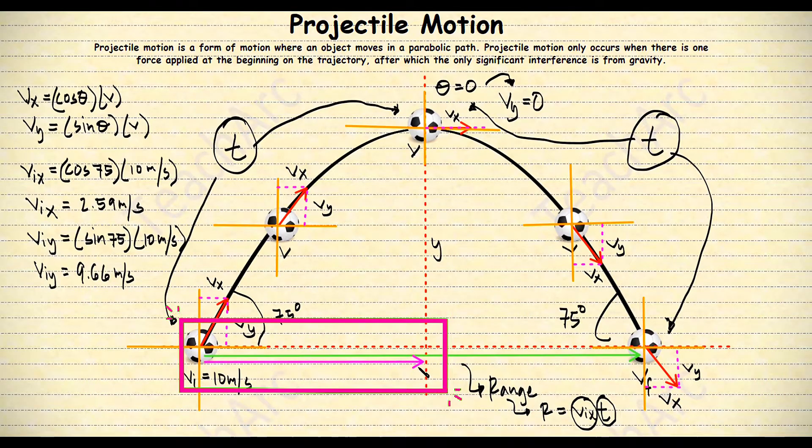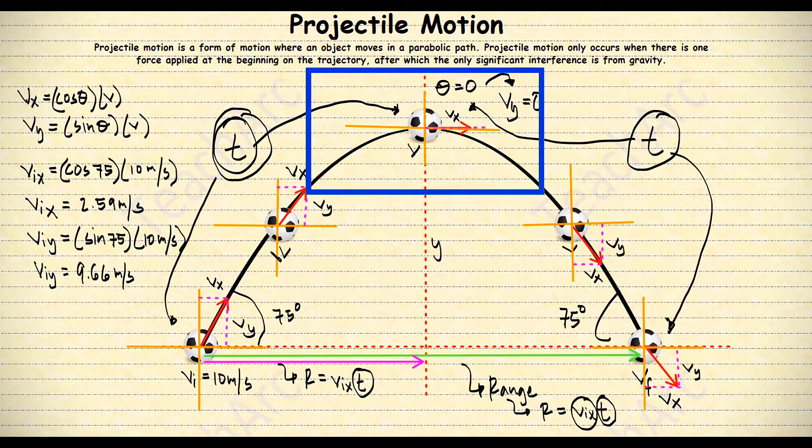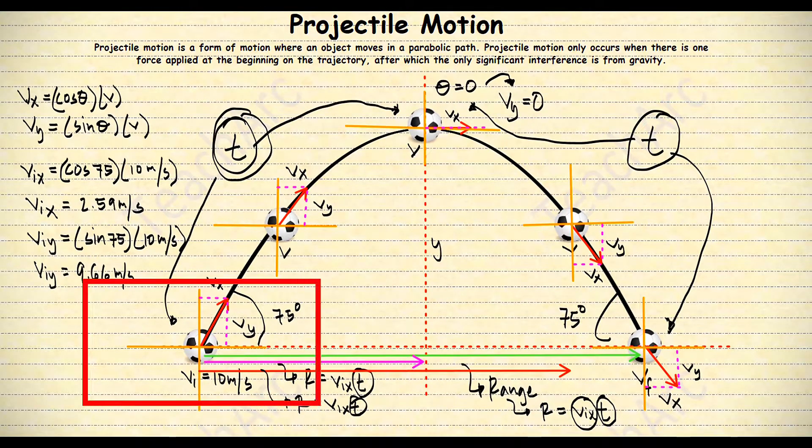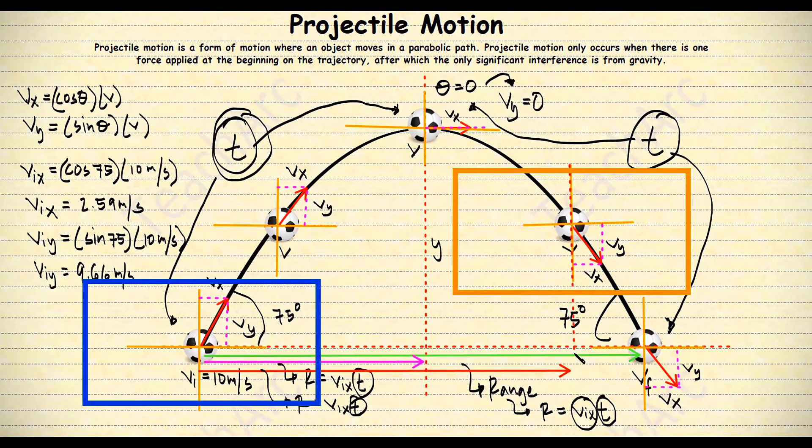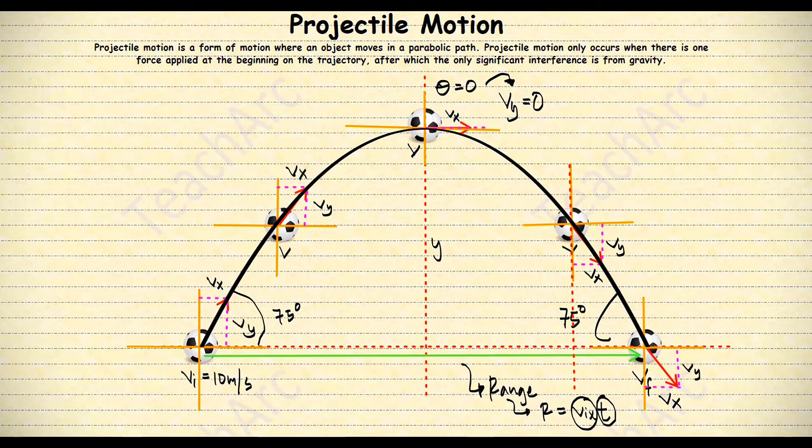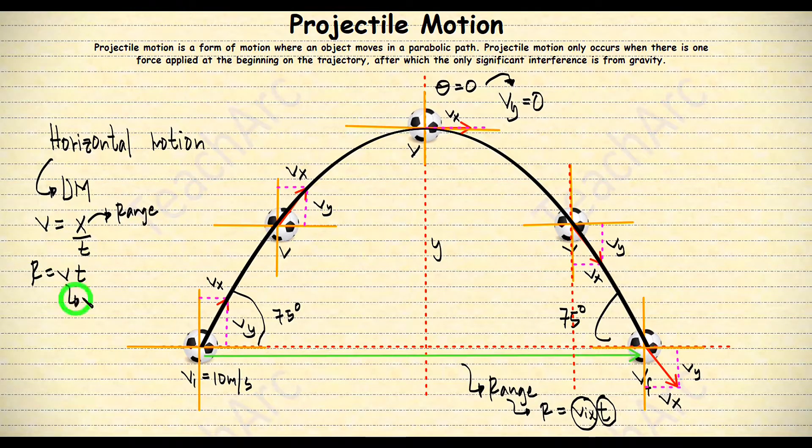Now, if we only want this distance, then we only need the time from the beginning to this point of the trajectory. Same with this distance, we need the time from the beginning until this point of the trajectory. The horizontal motion of a projectile motion is uniform motion, or the horizontal velocity of the ball at any point of its trajectory is not changing. That's why all the x components of all the velocities in the trajectory are the same. This is where the range formula is based from.